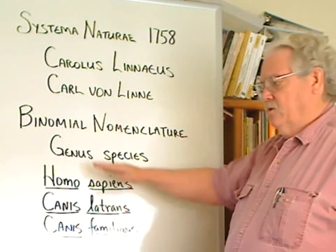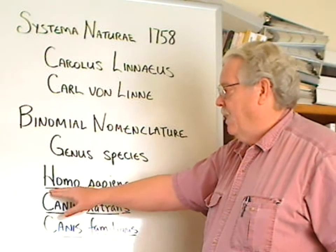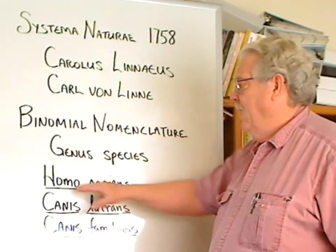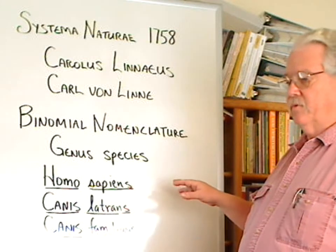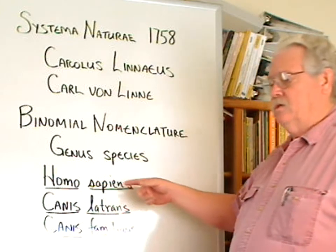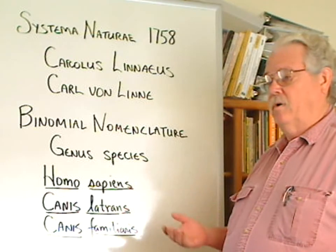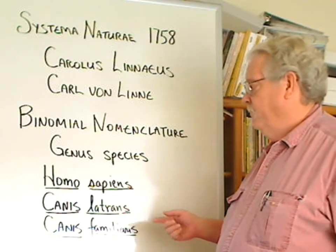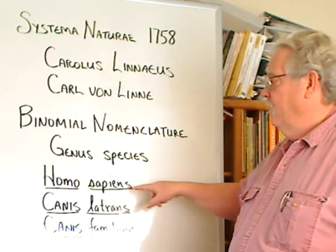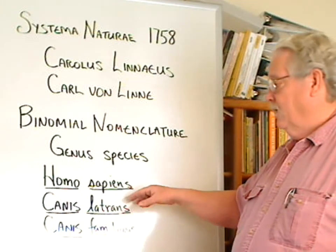The other thing to notice about the binomials and the format: capital genus, lowercase species, and both are underlined. There's a reason for this. In typesetting, to underline a word means to set it in italics to show that it is a foreign language. So this indicates that if this were in print, it would be italicized. This is a foreign language — it's Latin. It's a dead language now, but it is a foreign language.